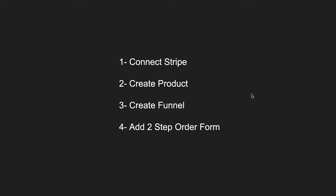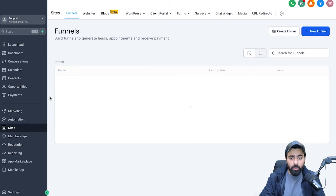In this video, I'm going to talk about how you can create a payment page inside GoHighLevel to get subscription-based clients. The first thing we have to do is connect Stripe. I'll give you a quick tour on how you can do that inside GoHighLevel, then we will be creating a product. Once we have the product, we'll start creating the funnel, and once the funnel is ready, we're going to add the two-step order form where we will be collecting the payments.